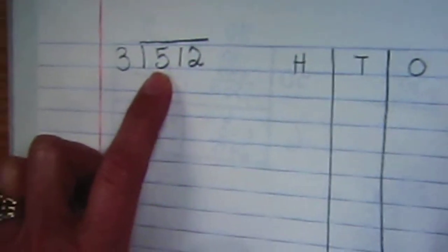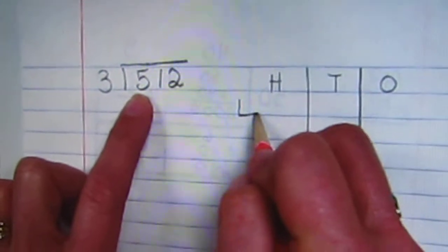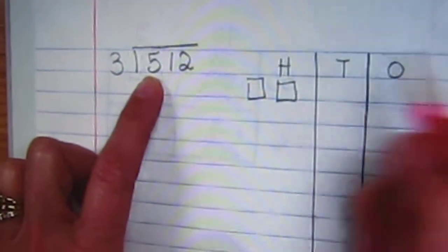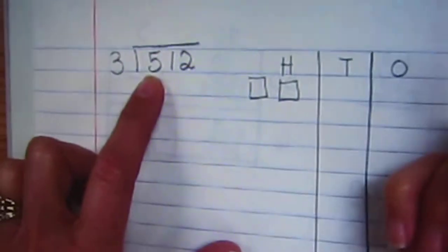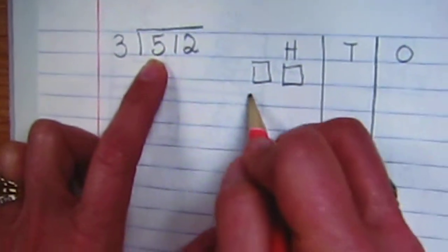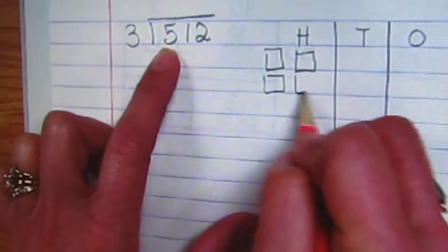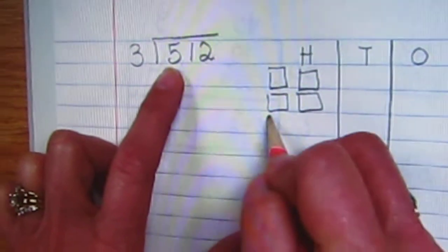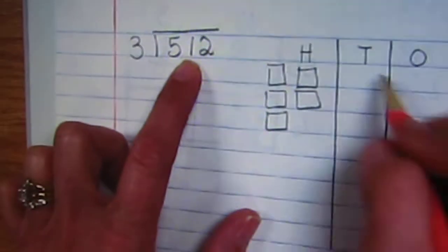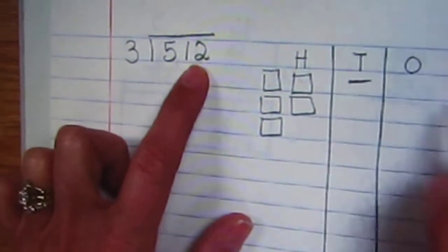I have five hundreds. We do hundreds with squares: 1, 2, 3, 4, 5. I have one ten and I have two ones.